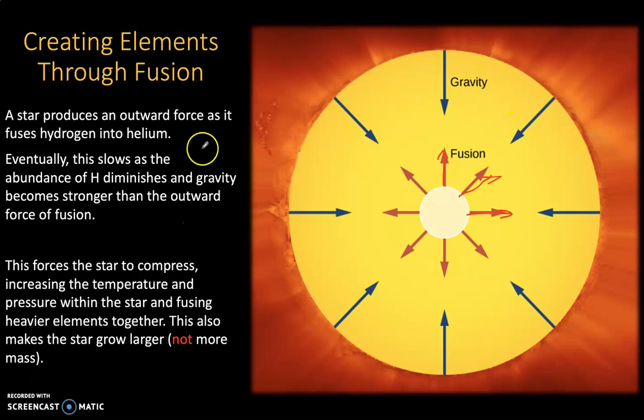However, eventually this slows as the abundance of hydrogen diminishes and gravity becomes stronger than the outward force of fusion. So as you start to run low on hydrogen, the force of gravity overtakes the force of the outward pressure of fusion. And that forces the star to begin to collapse itself. As gravity squeezes it, the pressure and temperature of the core increases. And that actually drives the star to create fusion reactions where heavy elements are produced. The star begins to fuse helium together into heavier elements such as lithium.